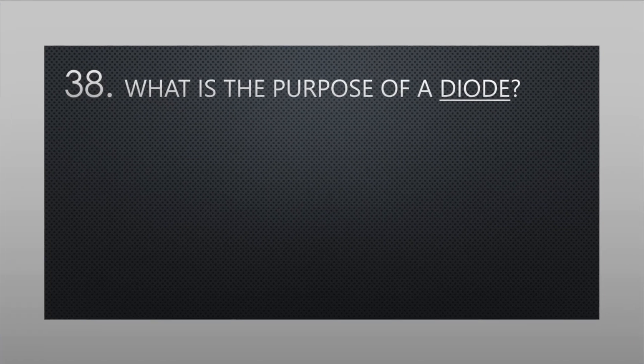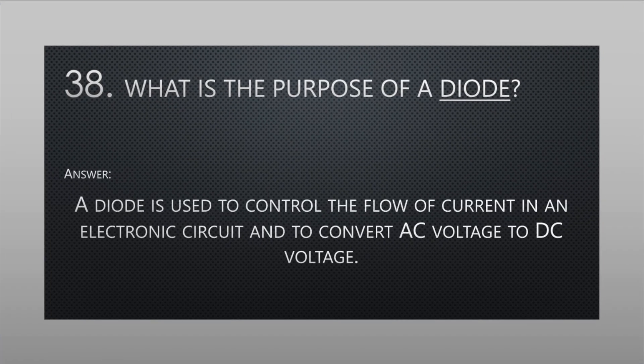What is the purpose of a diode? A diode is used to control the flow of current in an electronic circuit and to convert AC voltage to DC voltage.